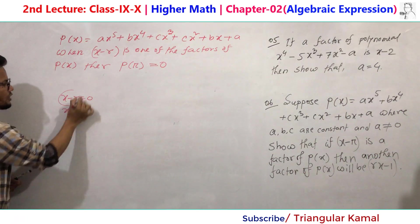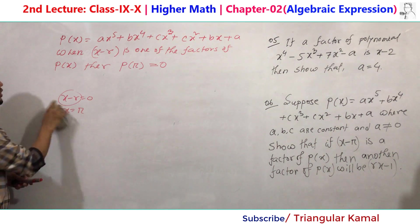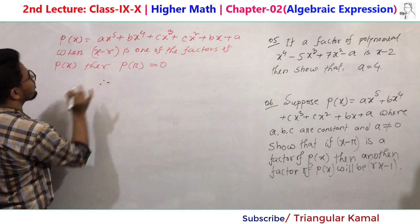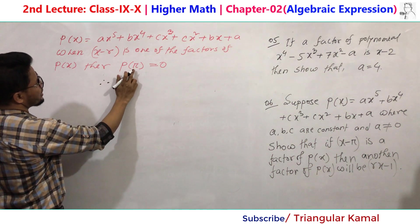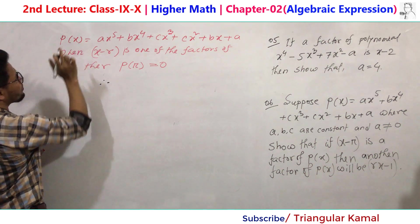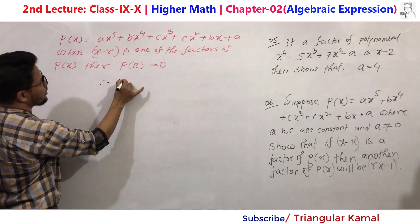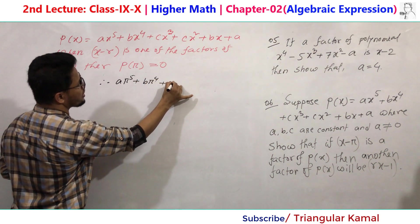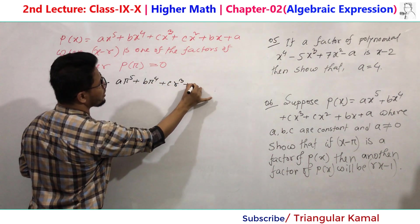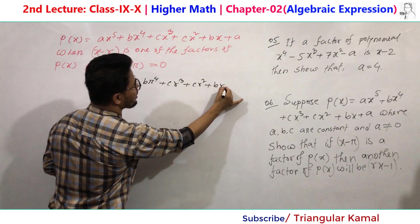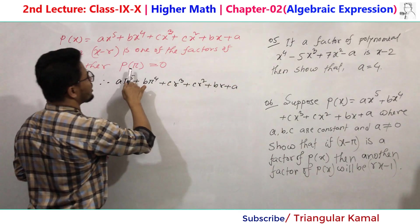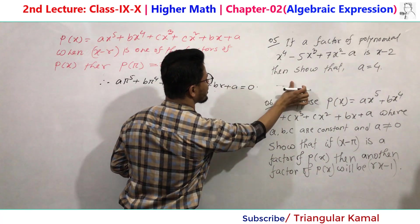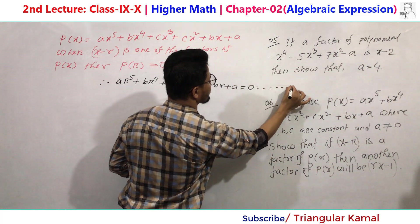Using the first information, find the result of p(r). p(r) equals ar to the power 5 plus br to the power 4 plus cr cubed plus cr squared plus br plus a, and p(r) equals zero. Call this equation number 1.